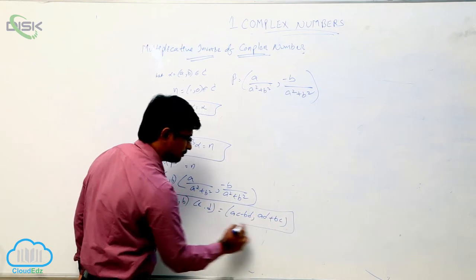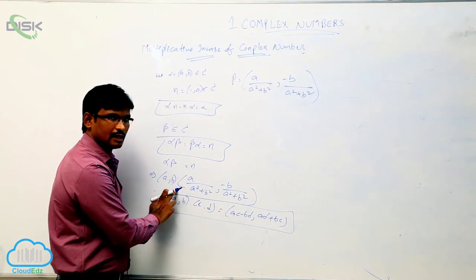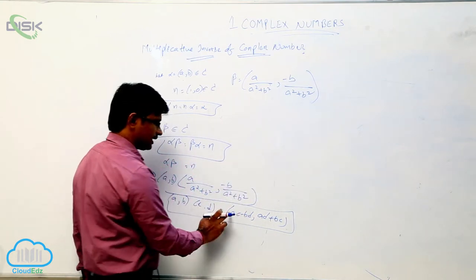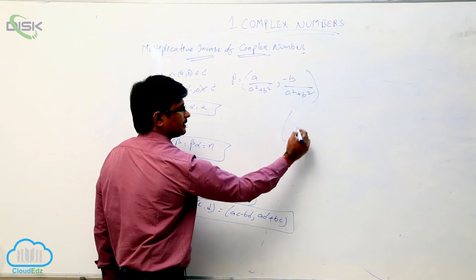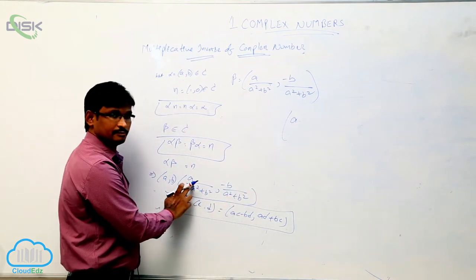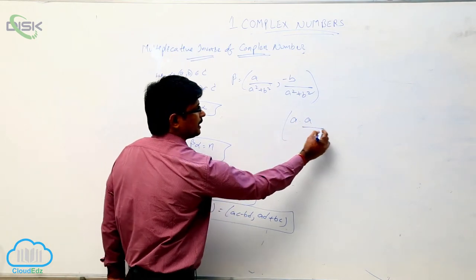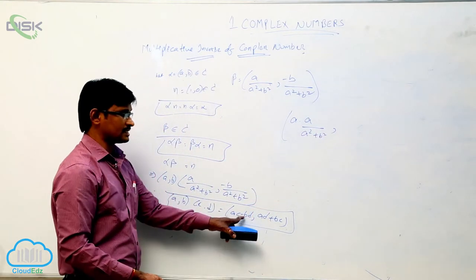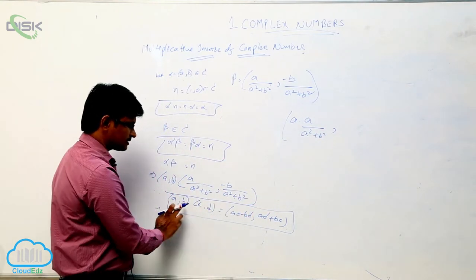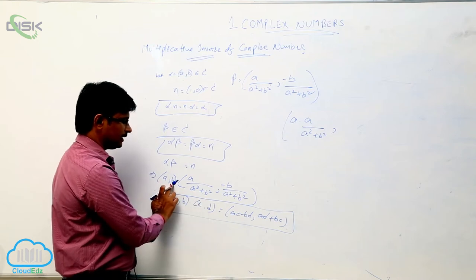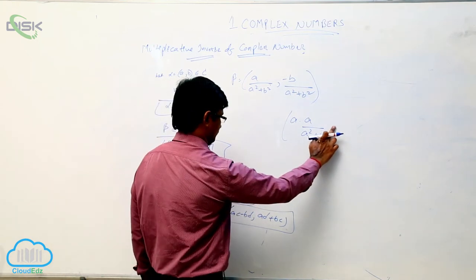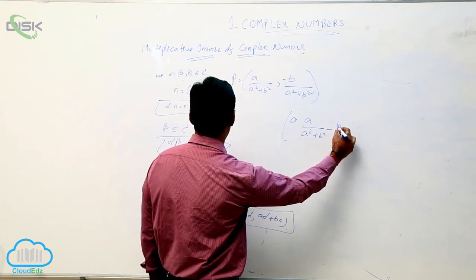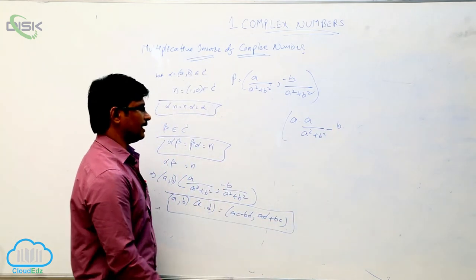Apply this property — it is in the form of (a, b) and (c, d). Apply ac: a into c, which is a/(a² + b²), minus bd: b into d, which is −b/(a² + b²). So b into d value: minus b into d value.